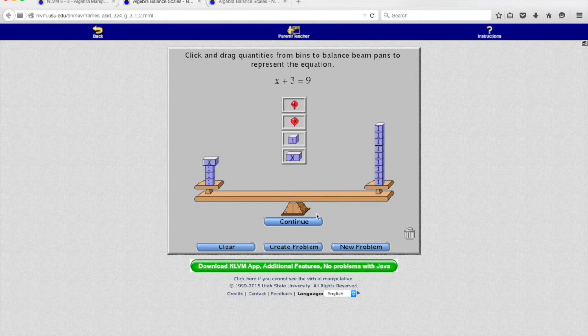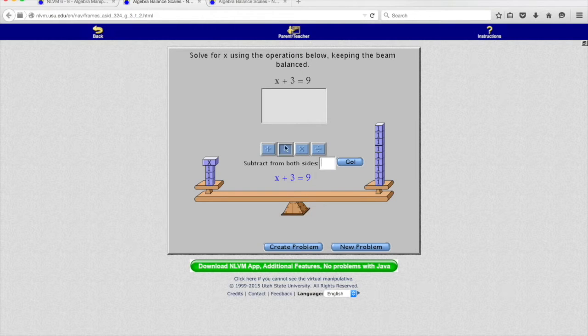So hopefully, what you thought of is that, well you know what, since I've got x plus 3 weights on this side, and then I've got 9 weights on this side, what we could do, yet keep the balance scale still level, is to subtract 3 from both sides.